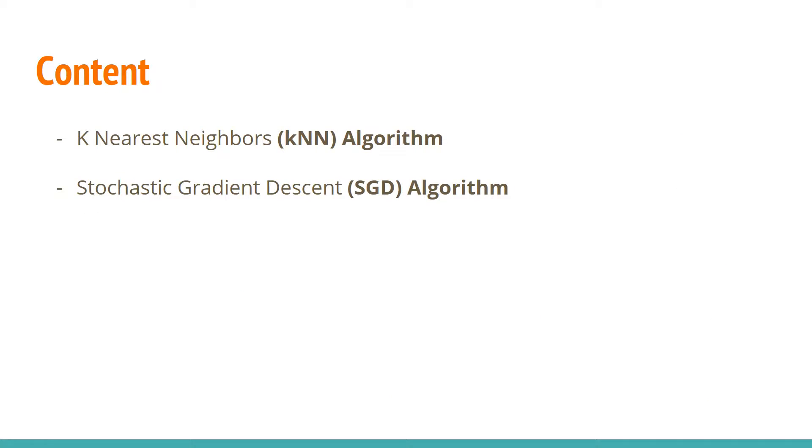We will be talking about two algorithms, which will be k-nearest neighbors, which is the KNN algorithm, and the stochastic gradient descent, which is the SGD algorithm.